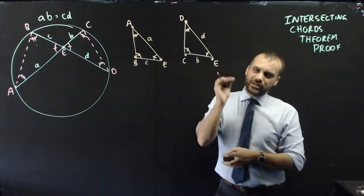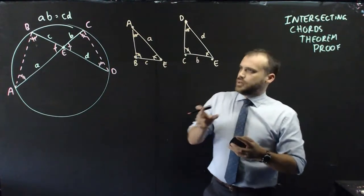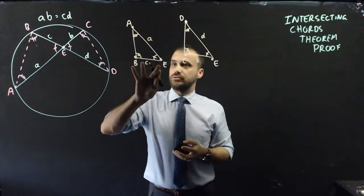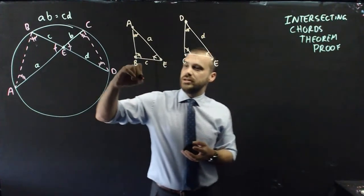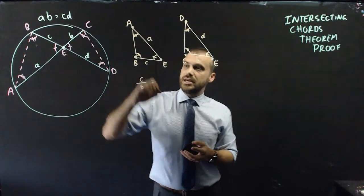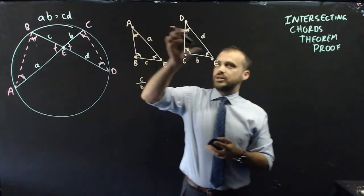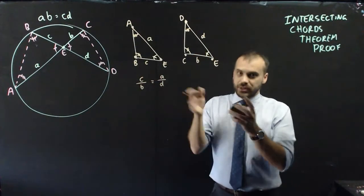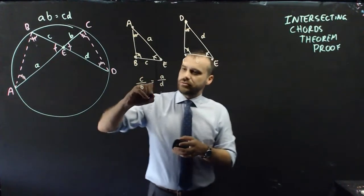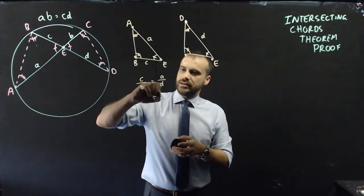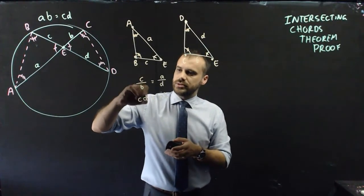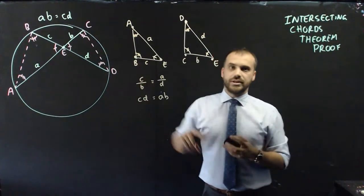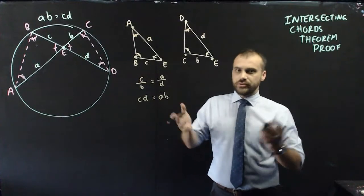This is an optional step, but I really need to show you what's going on. Because these triangles are similar, the ratio of side c to b equals the ratio of side a to d. If that's true, we can rearrange to say that A times B equals C times D. That snuck up on us — that's the proof. That's it. Done.